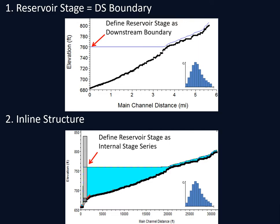The next video will move to unsteady. The second approach is to build your model including reaches upstream and downstream of the dam and put in an inline structure, but the quasi-unsteady approach won't be able to route flow through the reservoir. So you'll need to define an internal stage series to simulate the reservoir stages.